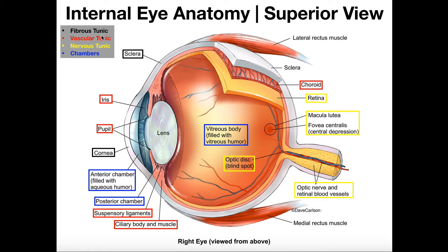The fibrous tunic really just has two major things: the cornea and the sclera. The sclera is just the white of the eye. Most of the sclera you cannot see when the eye is still in the socket, but looking closely you'll see white around the periphery. The sclera goes all the way around the back and covers about five-sixths of the total circumference of the eye. Also notice that the extrinsic eye muscles — the rectus and oblique muscles — all have their insertions on the sclera.